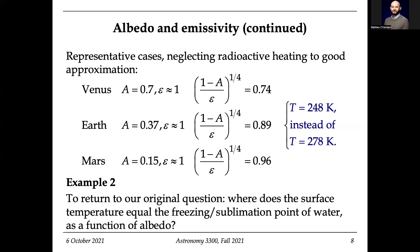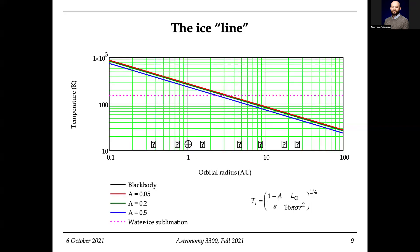Where does the surface temperature equal the freezing point of water as a function of albedo? Let's think about this in the context of forming the solar system. Here is the orbital radius — the distance from the sun. The reason it's a straight line is because it's a log-log plot. What I want to show here is that the black body is kind of the baseline, but you have all these different forms of albedo, and I'm looking for this location where water ice begins to sublimate.